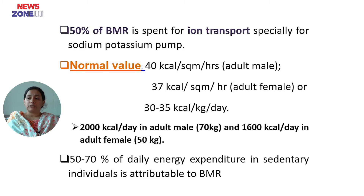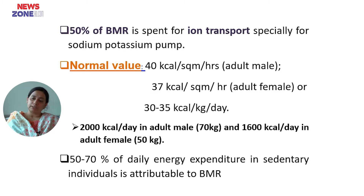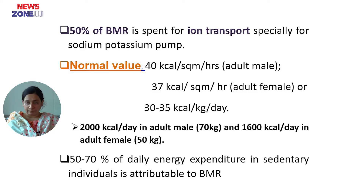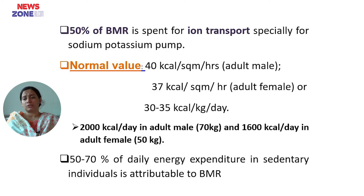The normal value of BMR is 40 kilocalorie per square meter per hour for adult males and 37 kilocalorie per square meter per hour for adult females, or 30 to 35 kilocalorie per kg per day. The average is 2000 kilocalorie per day for a 70 kg adult male. Fifty to seventy percent of daily energy expenditure in a sedentary individual is attributed to BMR.